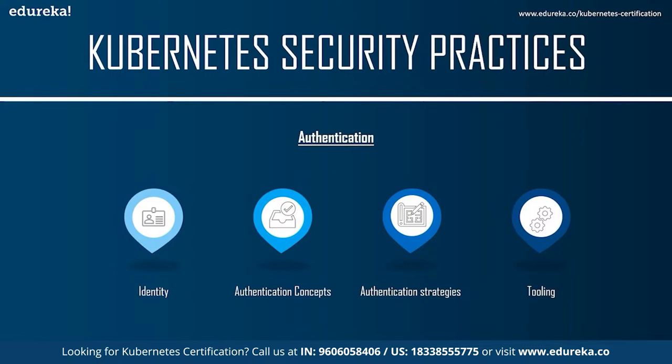The authentication flow works as follows: the client presents its credentials to the API server; the API server uses one of the configured authentication plugins; the identity provider verifies the request information including username and group membership; if the credentials are in order the API server moves on to check permissions, otherwise it returns an HTTP 401 Unauthorized response and the request fails. Kubernetes also supports user impersonation — a user can act as another user, useful for debugging authorization issues.